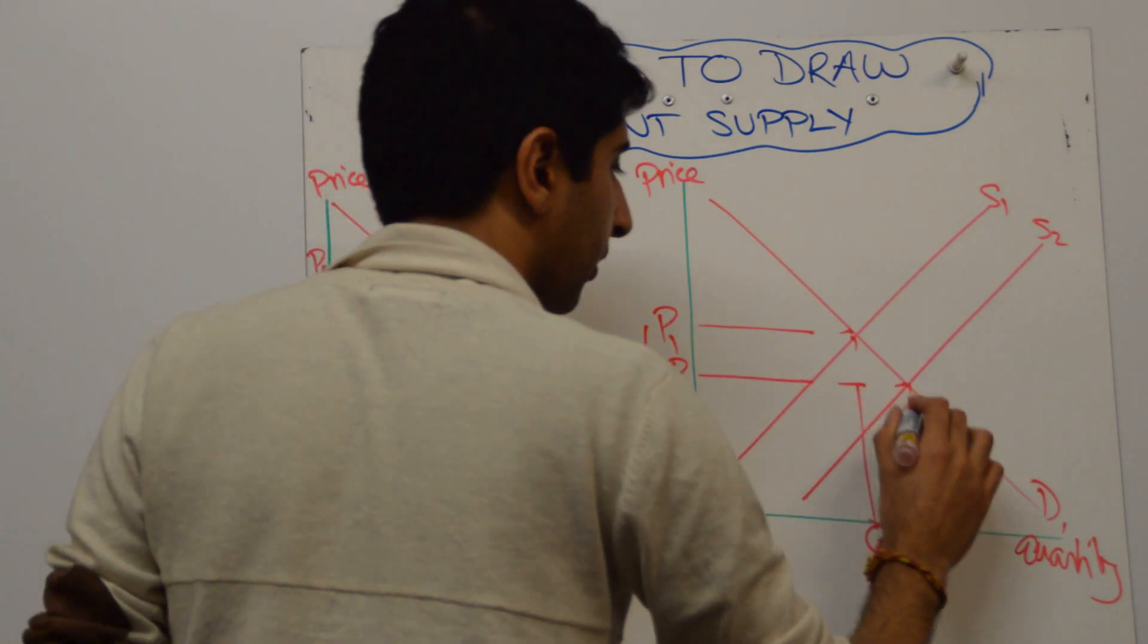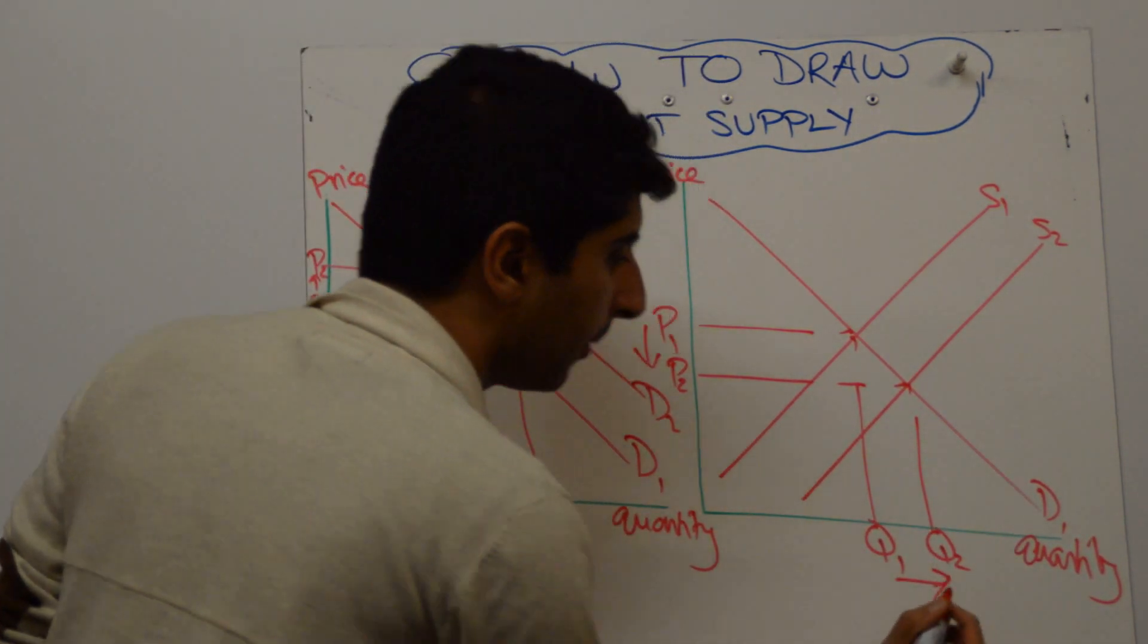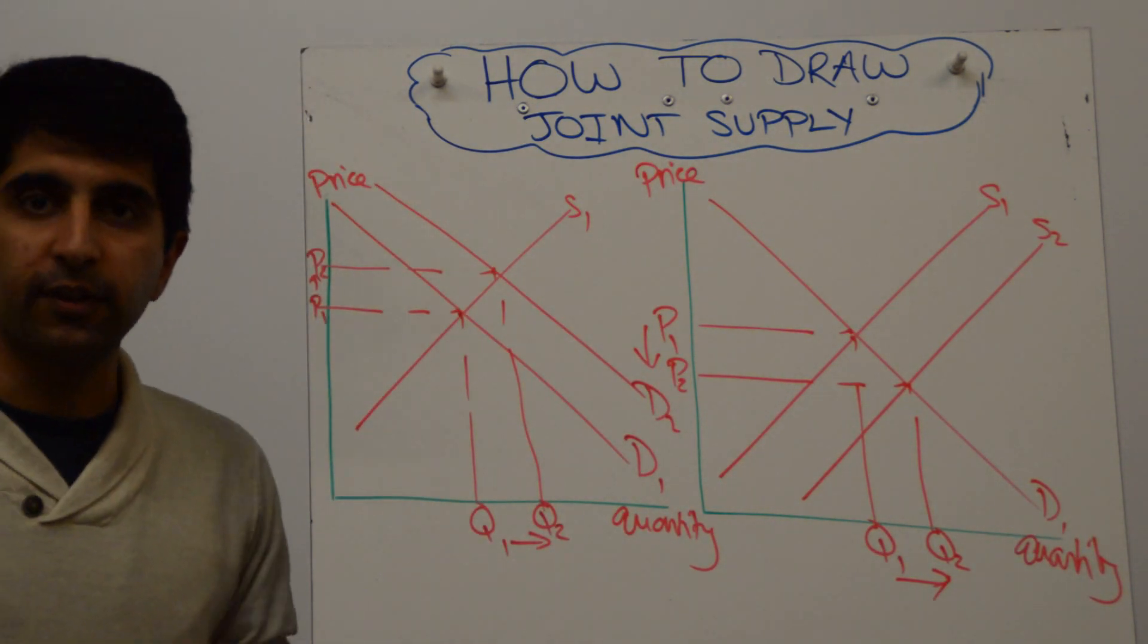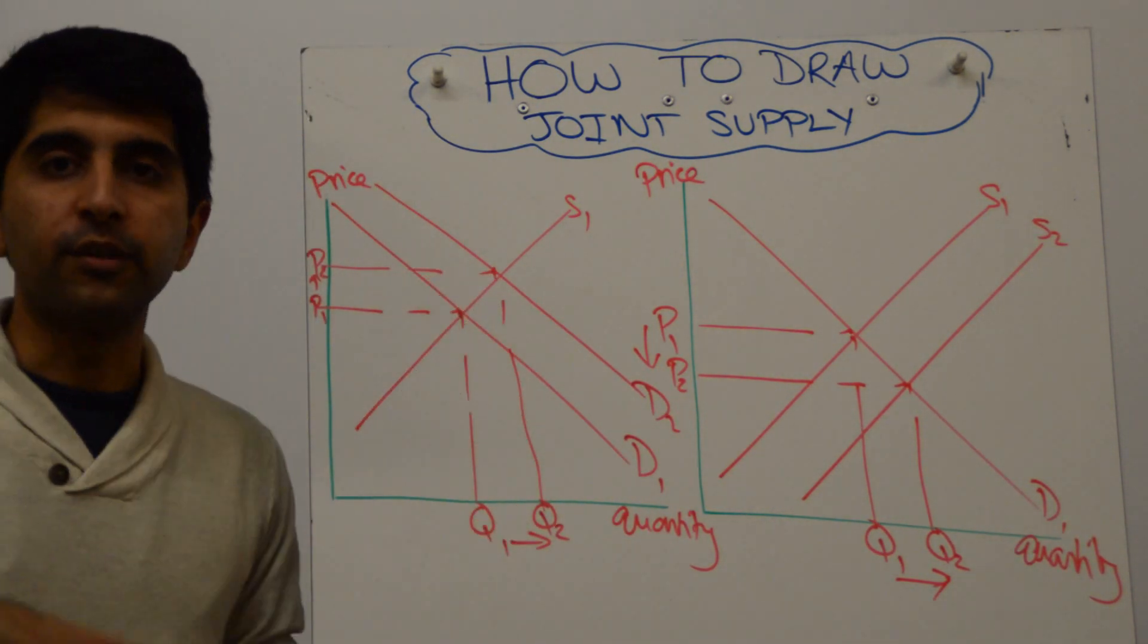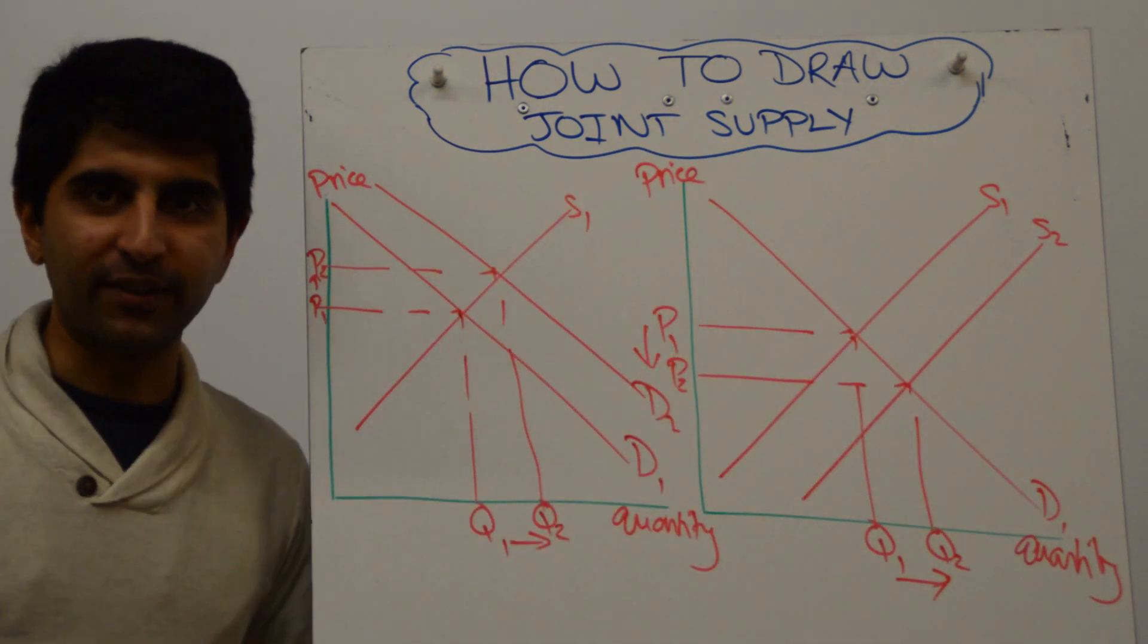The supply of beeswax is going to shift to the right from S1 to S2. Thus we'll see a lower price of beeswax, a greater quantity of beeswax in the market. So that's joint supply and the production of one good will simultaneously lead to an increase in the supply of another good. Honey and beeswax is a good example.